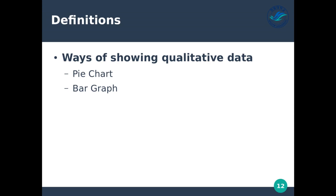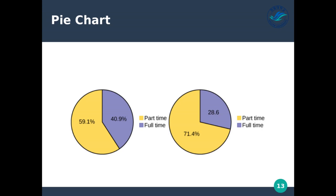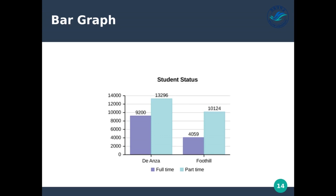Some ways of showing qualitative data — categories, not quantitative — are pie charts and bar graphs. For example, such a percent of the population has blonde hair, such a percent has black hair, and a pie chart shows those percentages. Here we have a pie chart of full-time and part-time workers — part-time is the majority for both. This shows percentage differences between full-time and part-time with qualitative data. A bar graph can also show the number of full-time and part-time students at particular campuses.